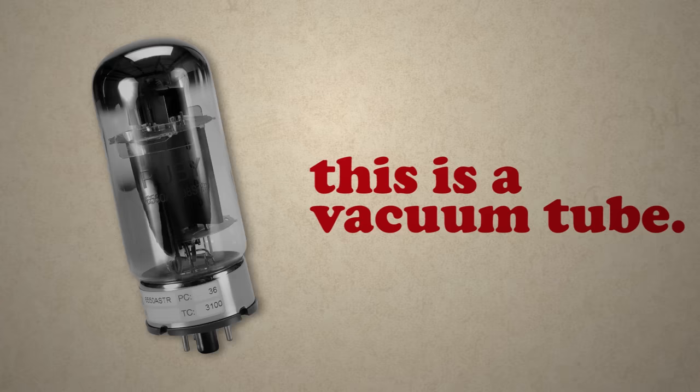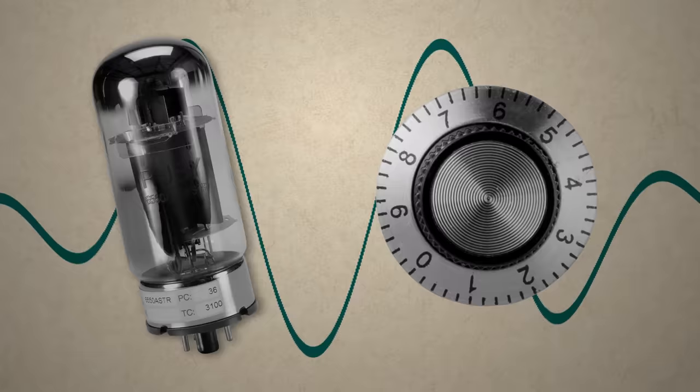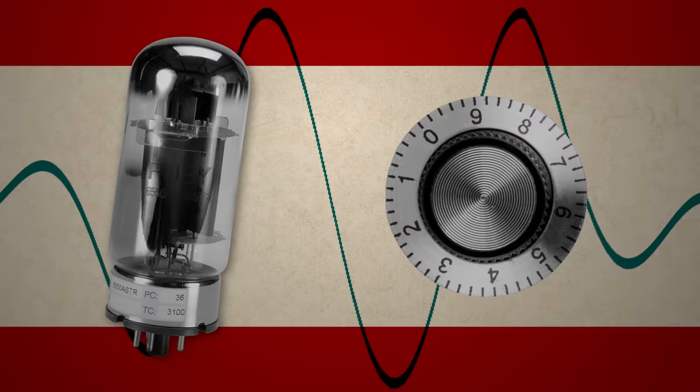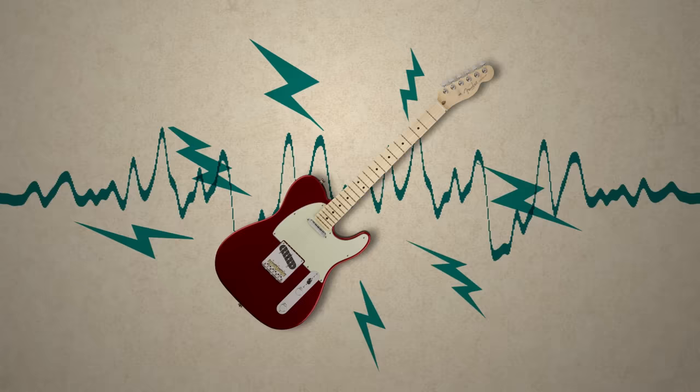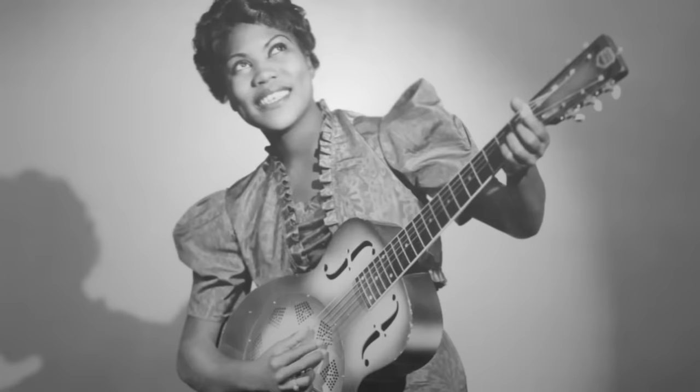Guitarists first started to figure this out in the 1940s. Back then, they used vacuum tube amplifiers. These vacuum tubes could only take so much electricity going through them. Guitarists discovered that if you cranked the volume on your amp, the power flowing through it would push it into overdrive, and the vacuum tubes would compress the sound waves so that they wouldn't break. The result was shifting a smooth, clean guitar sound into something with more grit and growl. This kind of distortion is aptly named overdrive, and it quickly became the rage in the late 1940s and early 1950s.